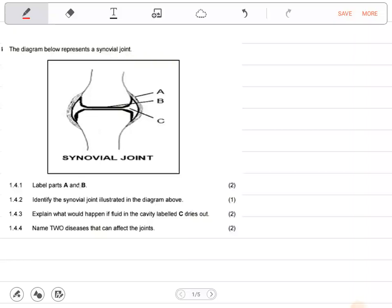Label the parts A and B. So what is part A? Look at it. That's a joint capsule.